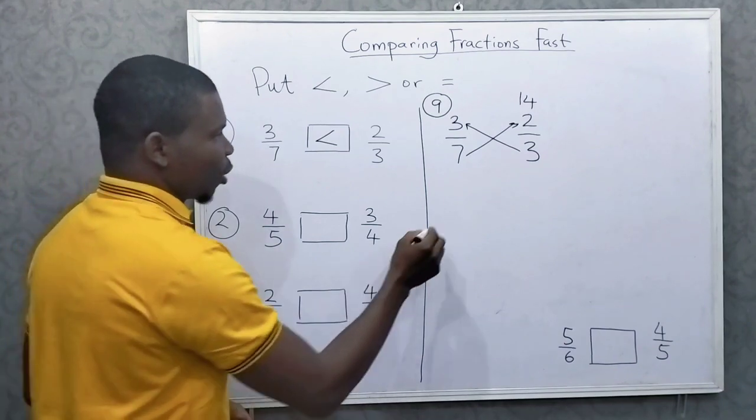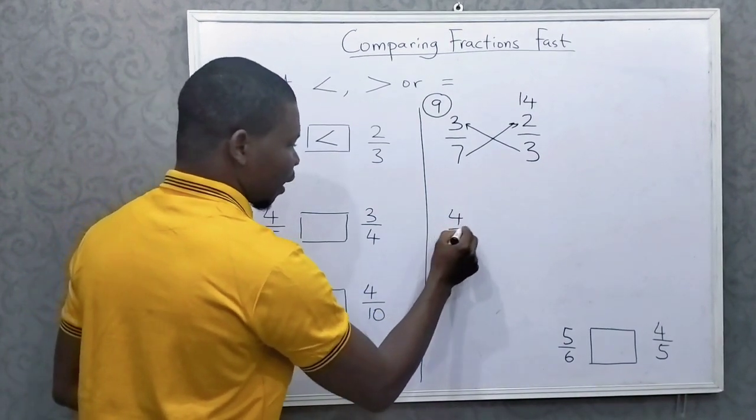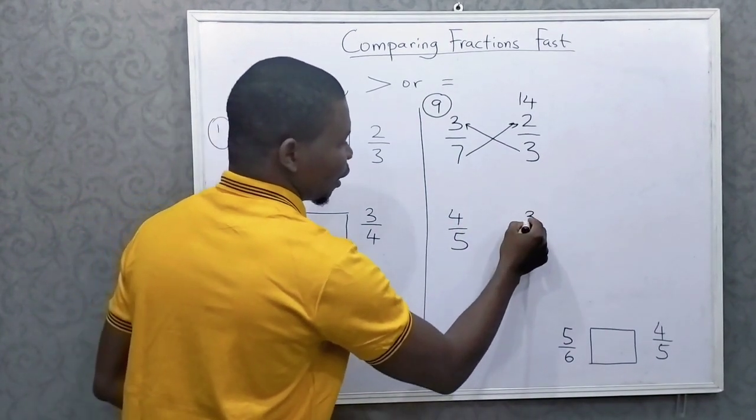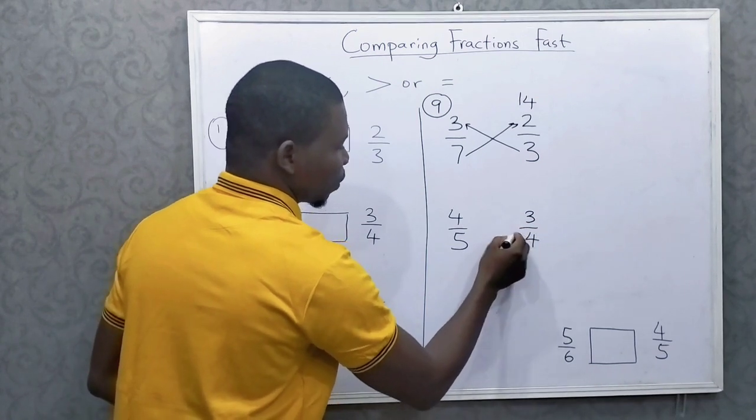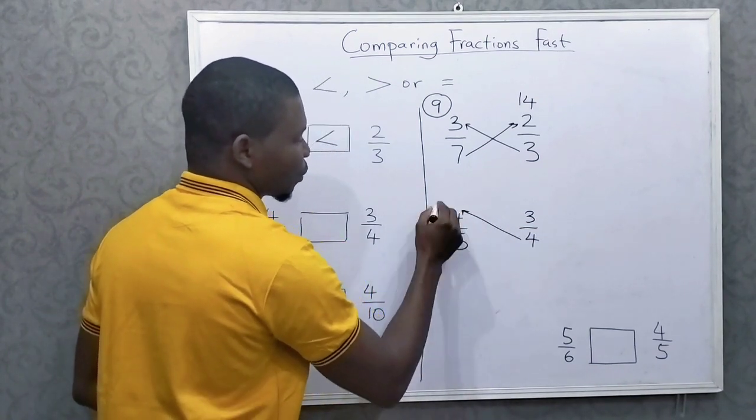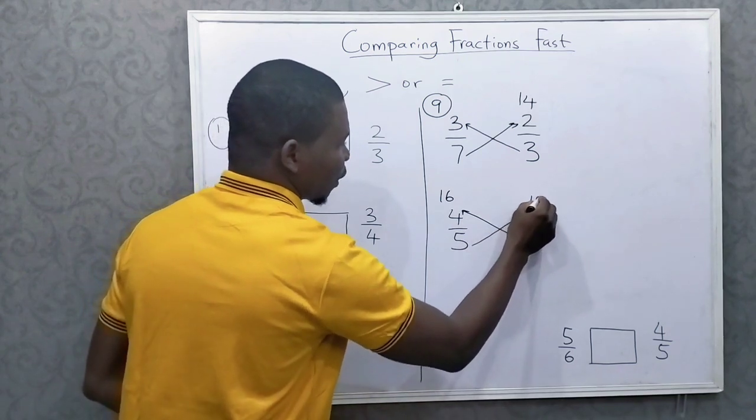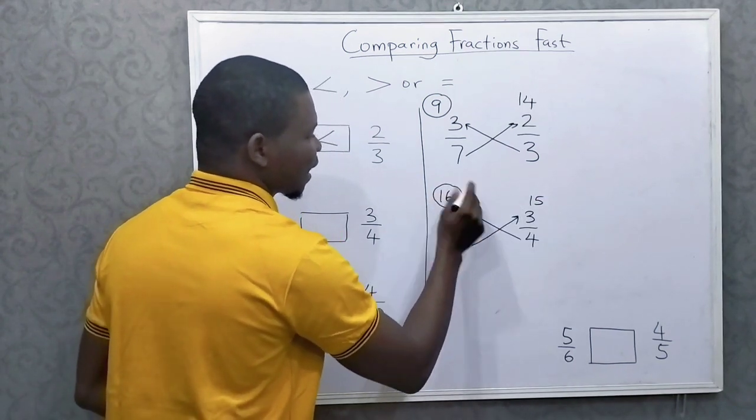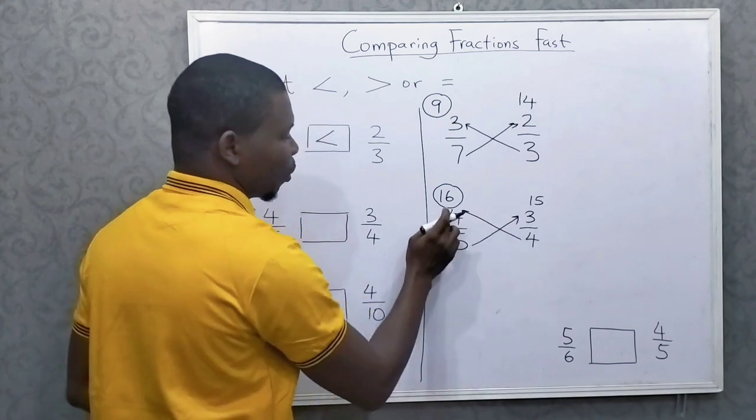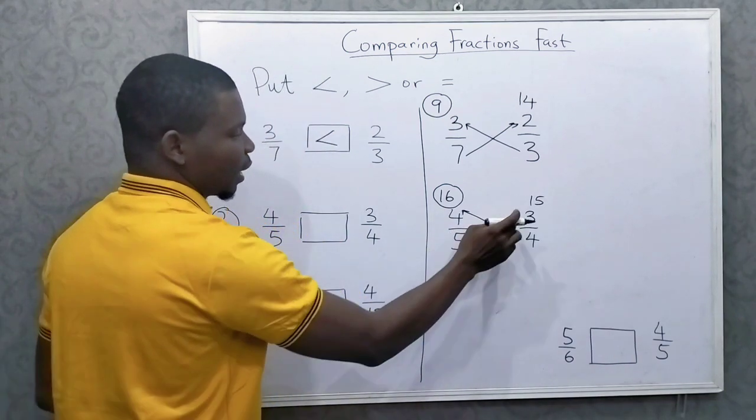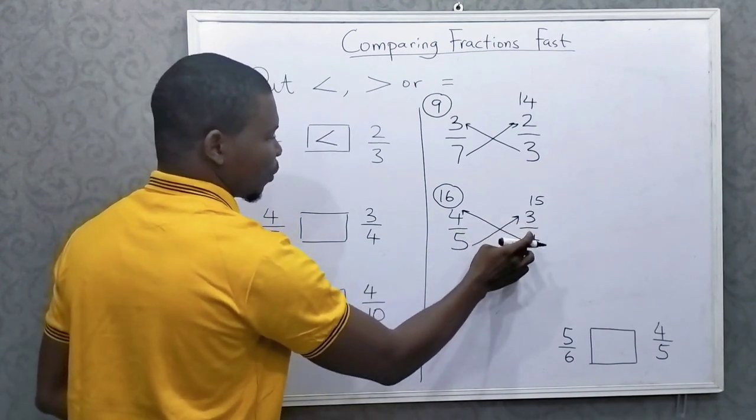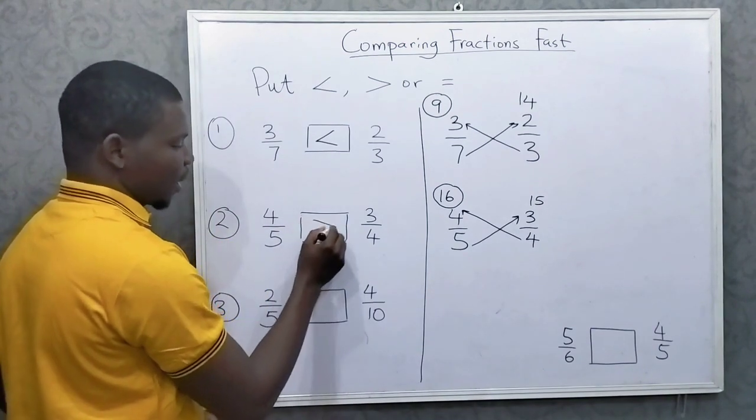Let's do the second one. 4 over 5 and 3 over 4. So we multiply diagonally. 4 times 4 is 16, 5 times 3 is 15. Now because 16 is greater than 15, we know that 4 over 5 is greater than 3 over 4. So we put greater than sign.